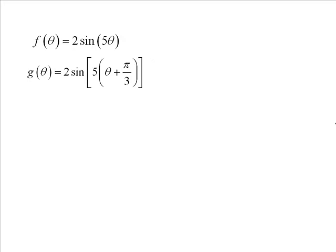Let's take a look at another pair. So we compare these two functions. And just to keep things interesting, I'm calling one f at theta and the other g at theta. So f at theta is equal to 2 sine 5 theta. G at theta is 2 sine bracket 5 bracket theta plus pi over 3, close brackets.